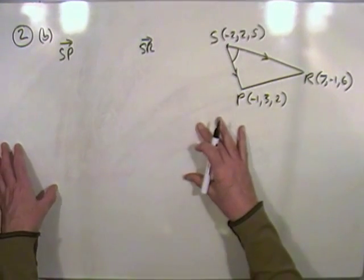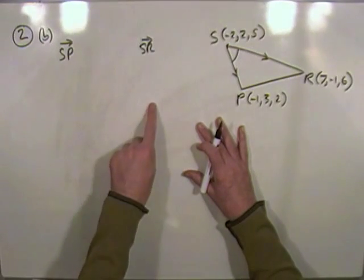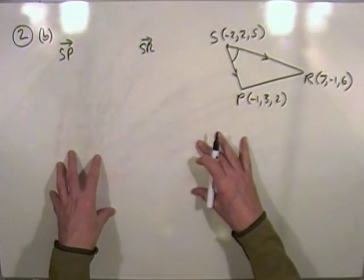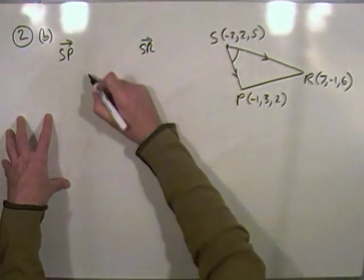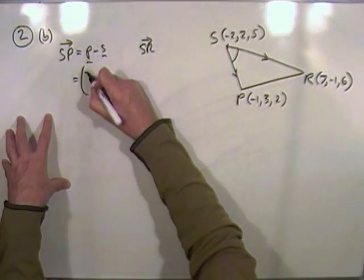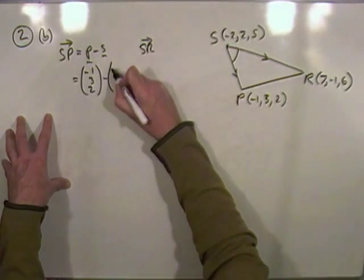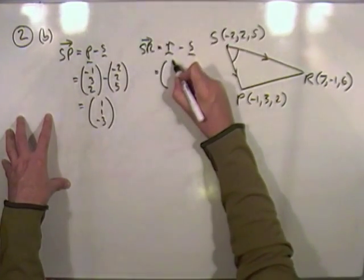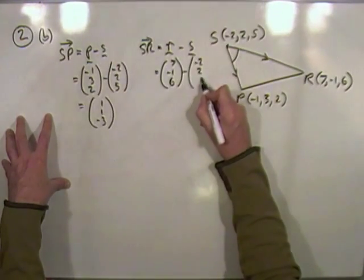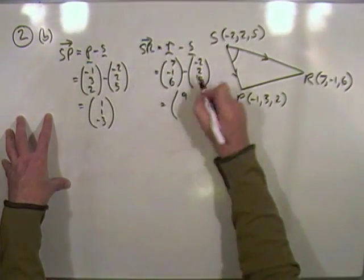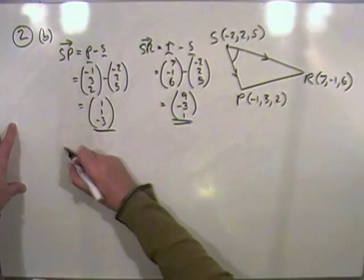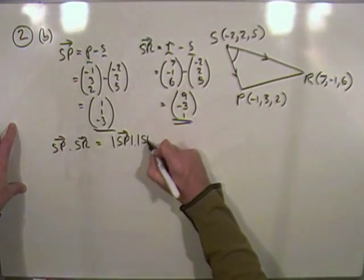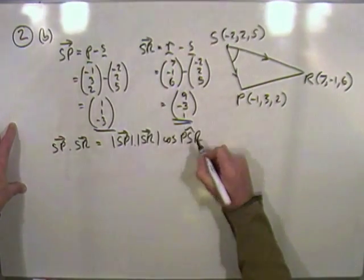Now I'm going to race through this bit because it's fairly straightforward. I'm going to find the components of this, the components of that, set out the scalar product, and then insert all the figures. So that's going to be P minus S, so it's negative 1, 3, 2, take away negative 2, 2, 5, and I'll be what? 1, 1, negative 3, right? R minus S, that's going to be 7, negative 1, 6, take away the same thing, negative 2, 2, 5, and that'll be 9, negative 3, 1. Right, now set out the scalar product. S, P dot S, R will be the length of S, P times the length of S, R times the cosine of the angle in between, angle P, S, R.